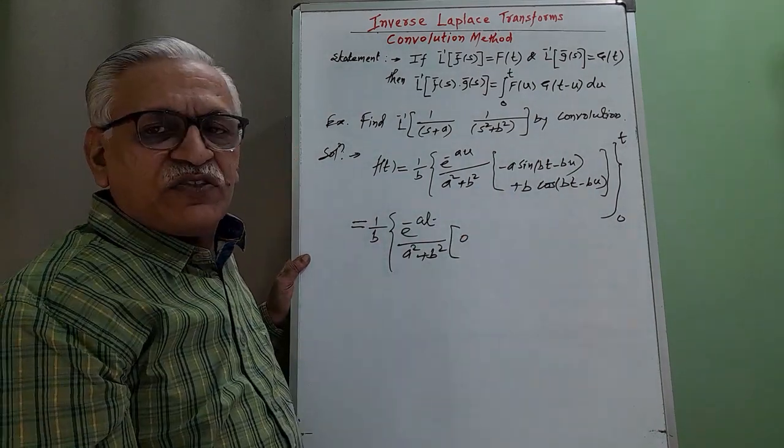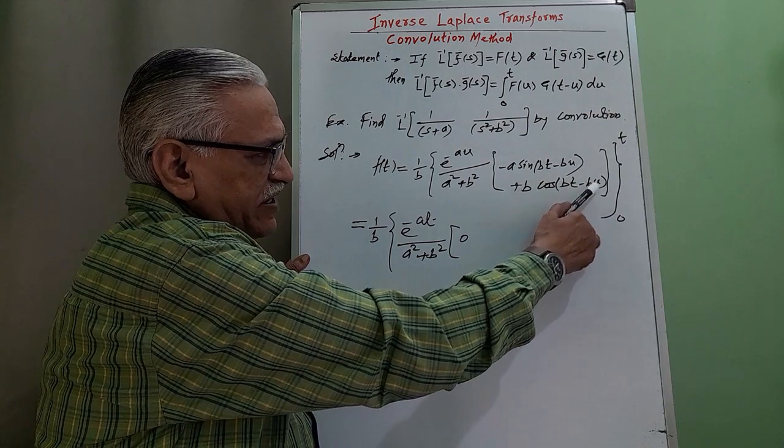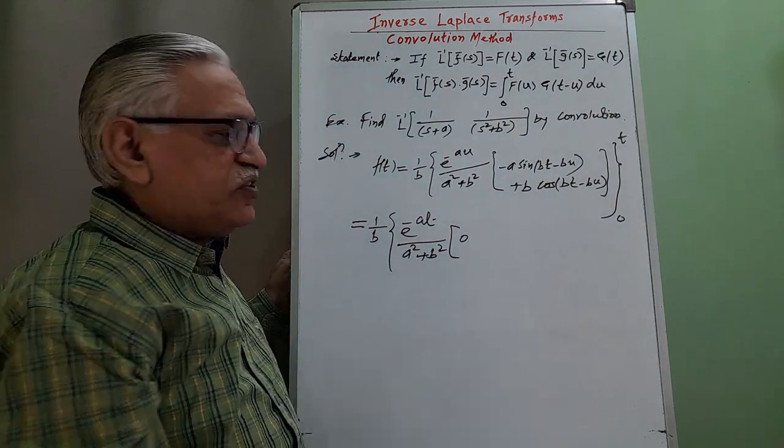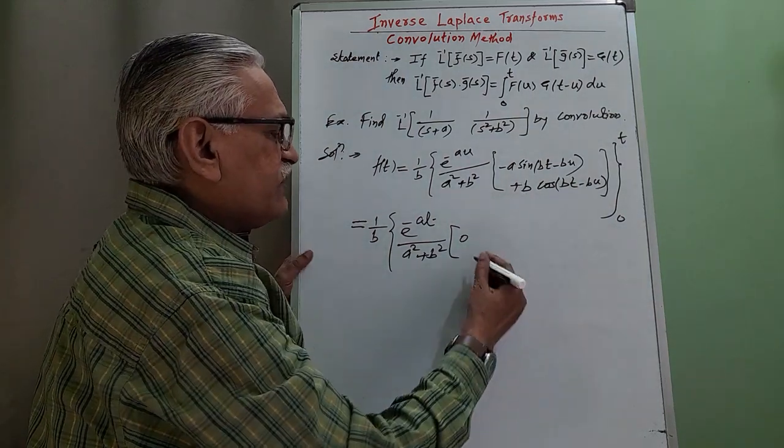It becomes sin 0 and the value of sin 0 is 0, first term becomes 0. Bt minus bt, it becomes cos of 0 and cos 0 is 1 and therefore we get b.